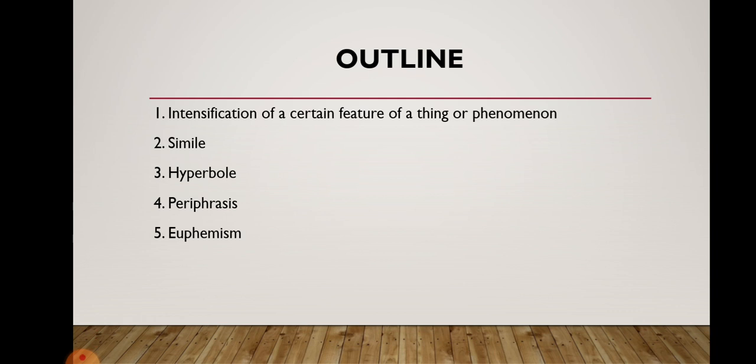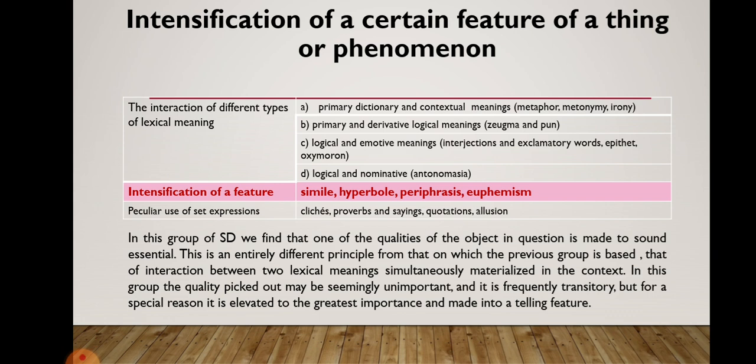We will then discuss stylistic devices in more detail, such as simile, hyperbole, periphrasis, and euphemism. As you have noticed from the previous lectures, stylistic devices can be classified according to three criteria: the interaction of different types of lexical meaning, intensification of a feature, and peculiar use of set expressions. Today's lecture is devoted to the second criterion of this classification given by Galperin — intensification of a feature. In this group of stylistic devices, one of the qualities of the object in question is made to sound essential.